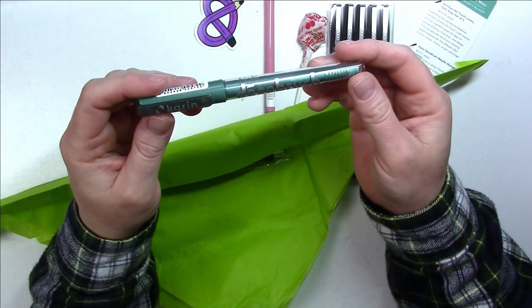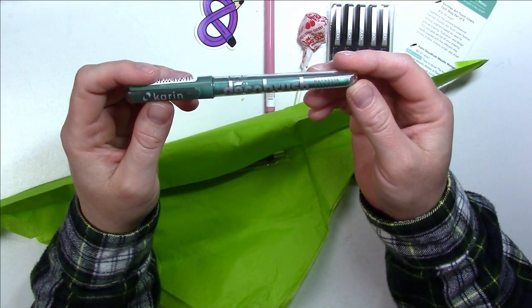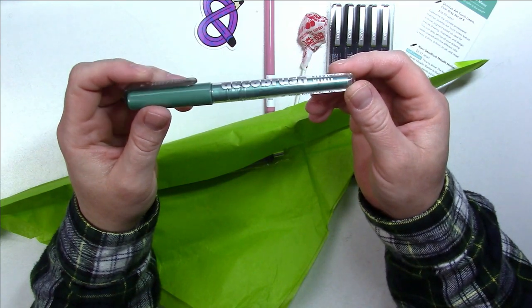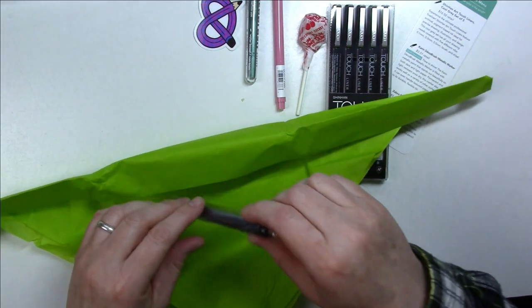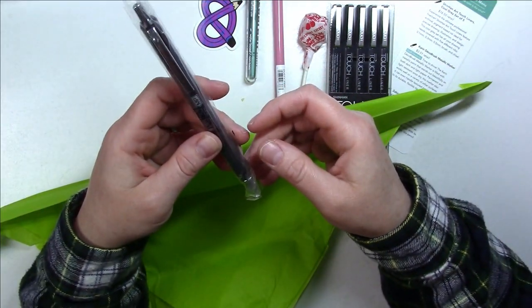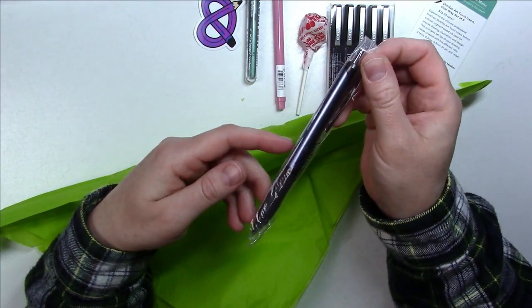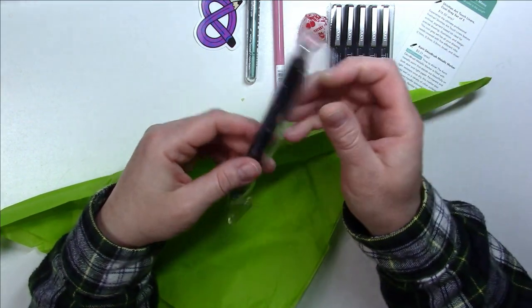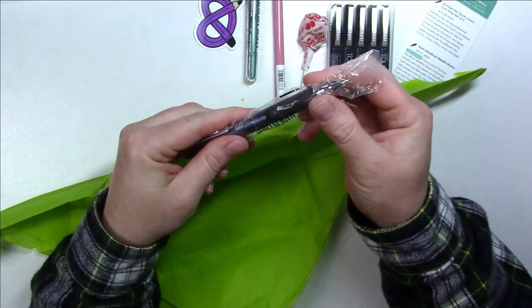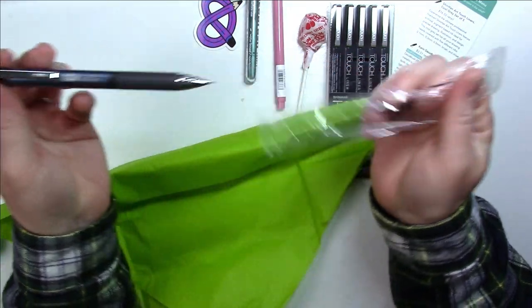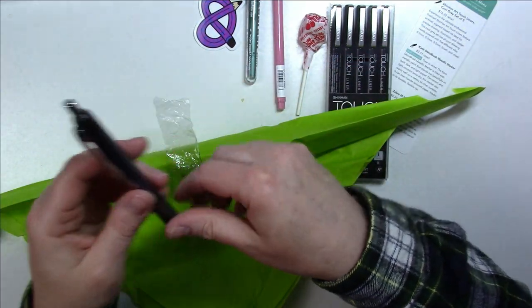Then we have a Kuretake Zig Deco Brush metallic permanent marker, and it's in metal green. And a Zebra - that's funny, it just looks like my favorite pen, which is a Pentel. Oh my gosh, it's just the same color.